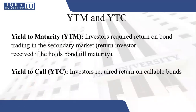Now we discuss the next type of yield: yield to maturity (YTM). It is the investor's required return on a bond trading in the secondary market — the return the investor receives if he holds the bond till maturity. The investor is not going to sell the bond in the middle; he purchases it now and holds it until the bond matures. That total return is your yield to maturity, and it is also your required rate of return on the bond.